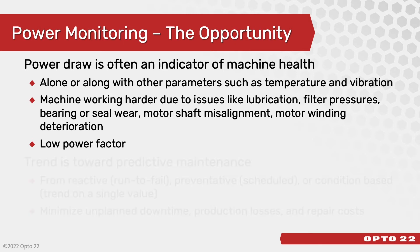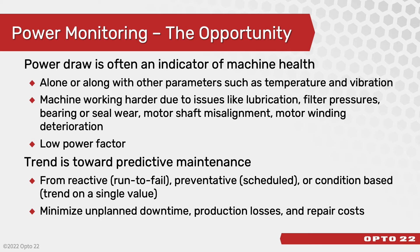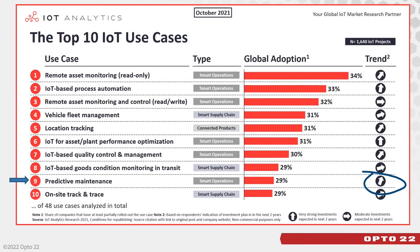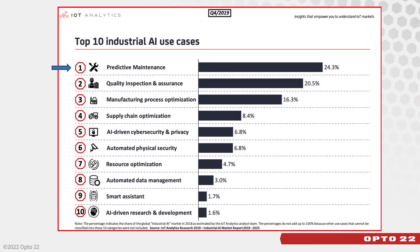Low power factor can also indicate problems. There is a trend toward predictive maintenance. Traditional machine maintenance was either reactive or run-to-fail, preventative which was scheduled, or condition-based which monitored a single value. Predictive maintenance can minimize unplanned downtime, production losses, and repair costs. In recent data, predictive maintenance is one of the top 10 use cases for the IoT and it's trending upwards. When it comes to artificial intelligence, predictive maintenance is the number one use case, and power is an important parameter for analytics of machine health.